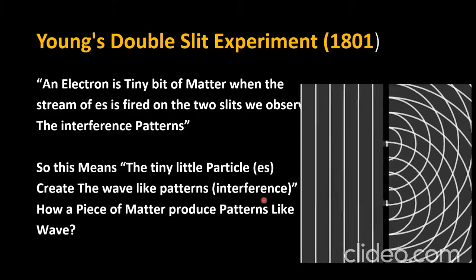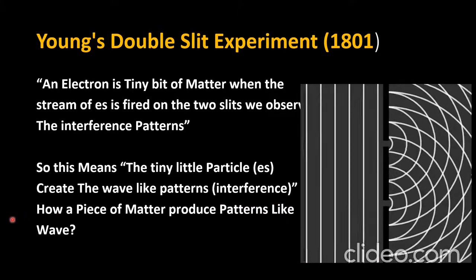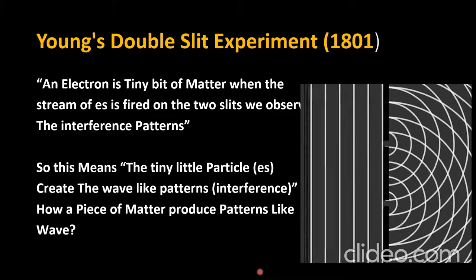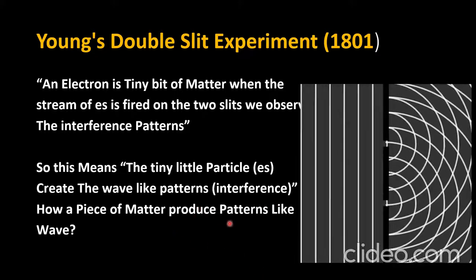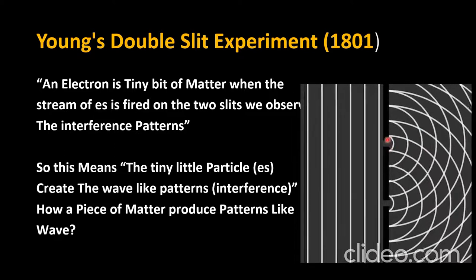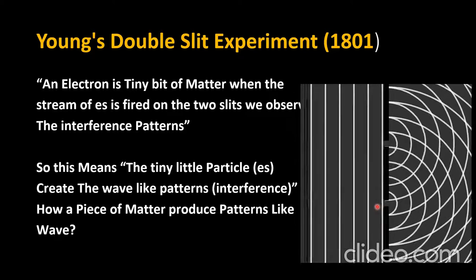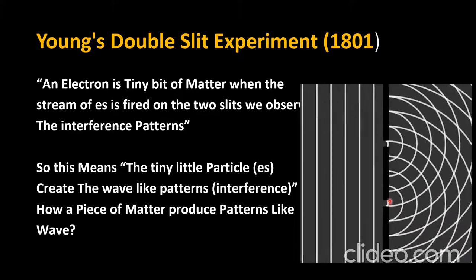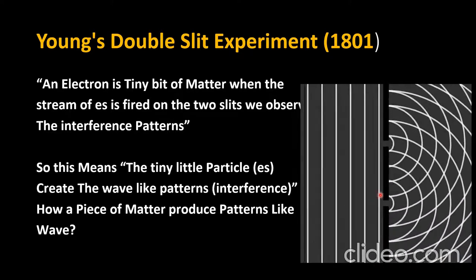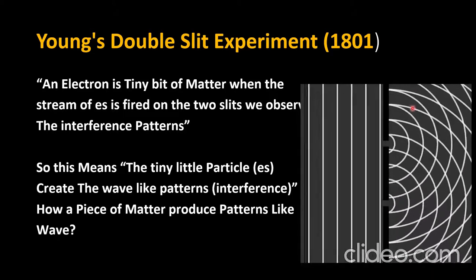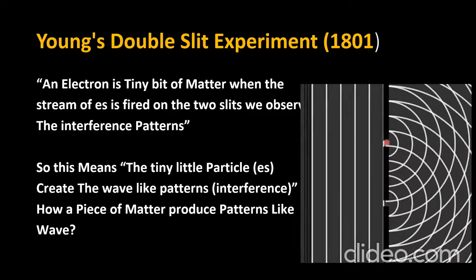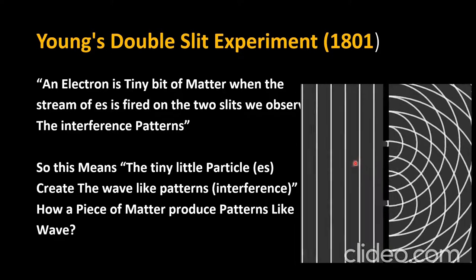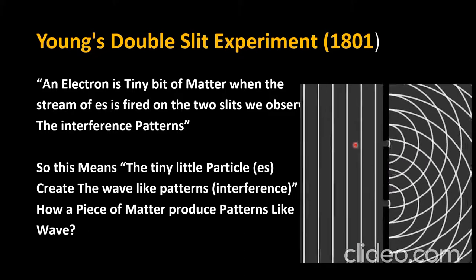Interference is a wave property, not a particle property. So the question is: how does a piece of matter produce a wave-like pattern? To answer this, the experiment was repeated with a detector placed at each slit, and the density of electrons was varied. Each time, the detector detected electrons passing through one slit, not both. This demonstrates that the particles themselves do not form the interference pattern — it is the wave associated with the electron that produces the interference pattern, and this wave passes through both slits.